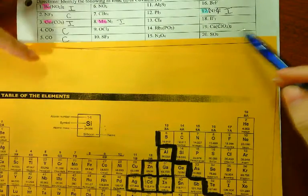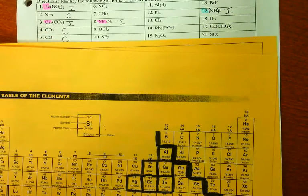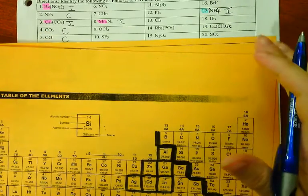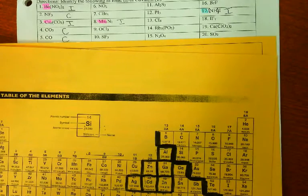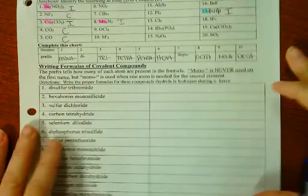If you cannot tell a difference between ionic and covalent, then you can't name them correctly. So go through the rest of those, look for metal. If there's a metal, it's ionic.